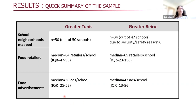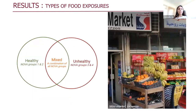As you can see, the numbers are very close. We just have a slightly higher number of ads per school in Greater Beirut compared to Greater Tunis. These retailers and advertisements were classified into three groups — healthy, mixed, and unhealthy — based on NOVA.